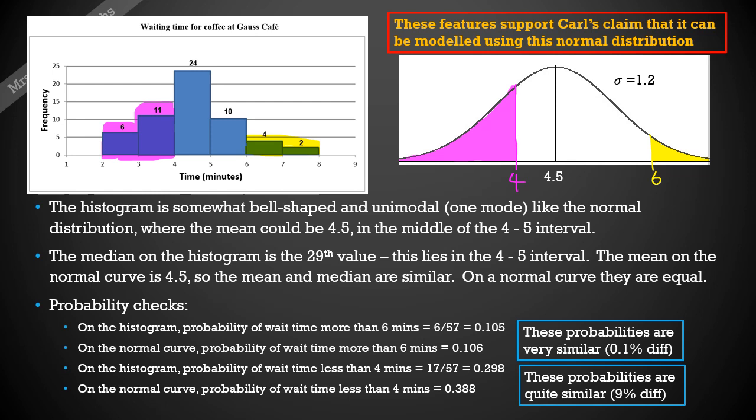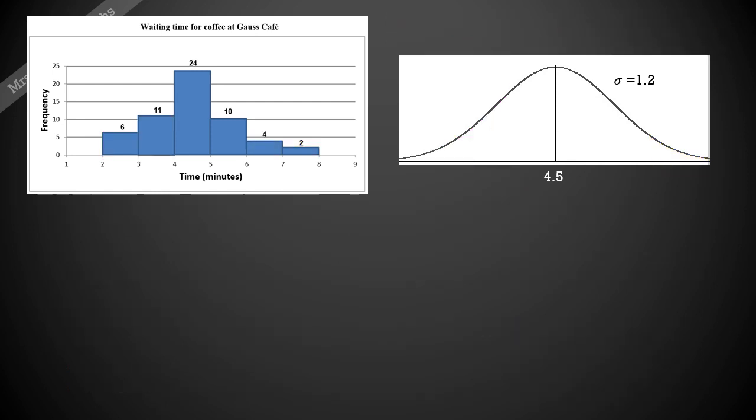Now I'm going to go ahead and argue things the other way as well, because there's no right answer here. You could argue for it being the normal distribution or you could argue against it as long as you support your claims. When you're answering this question on the exam you only need to argue one way. You don't need to argue them both. You need to make a decision to go one way after you've done your calculations, make your decision based on that.